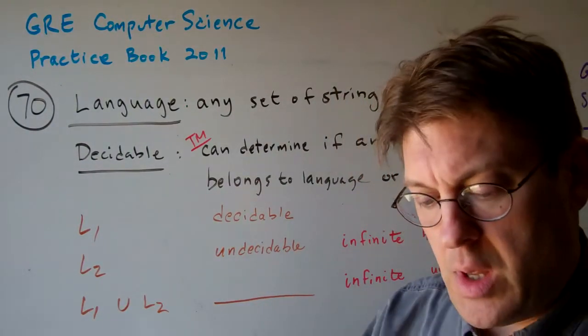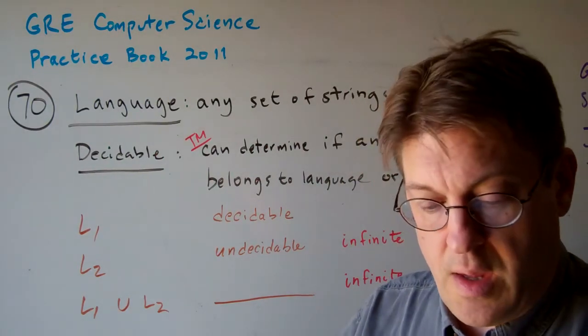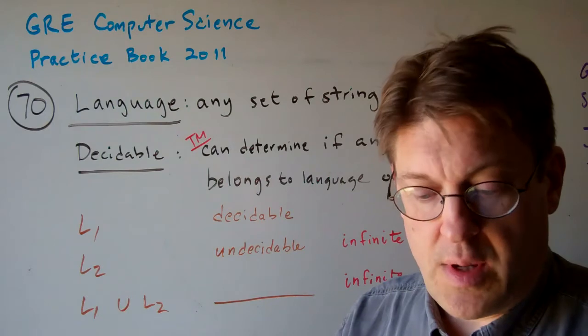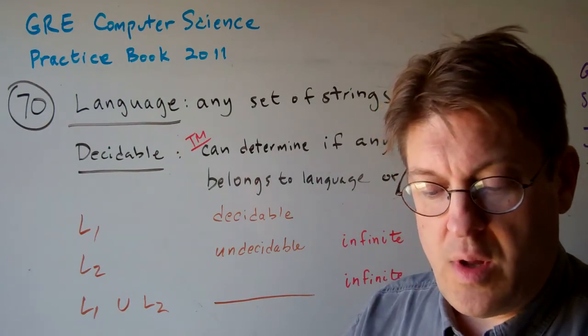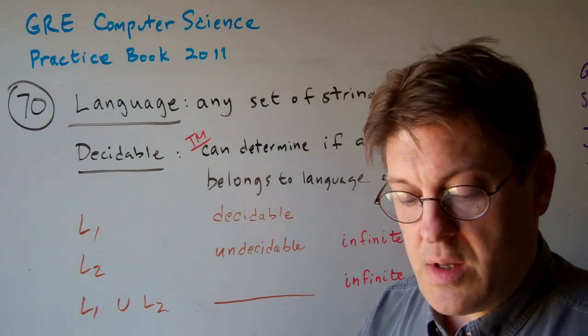Question 70. If L1 is a decidable language, and L2 is an undecidable language, then L1 union L2, the union of L1 and L2, is...